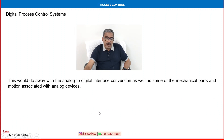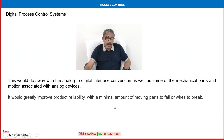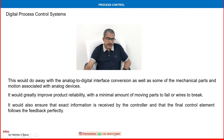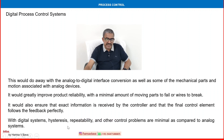This would eliminate the analog-to-digital interface conversion — a major advantage. It would also remove much of the mechanical parts associated with analog devices, greatly improving product reliability with a minimal amount of moving parts to fail or wires to break. Communication received by the controller and final control element would be much clearer and more precise. With a digital system, hysteresis, repeatability, and other control problems are minimal compared to analog systems.